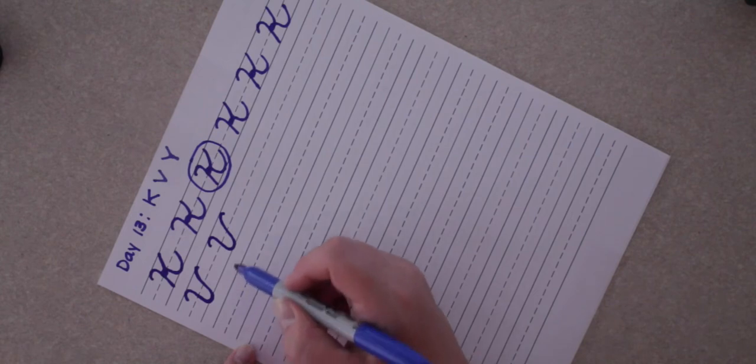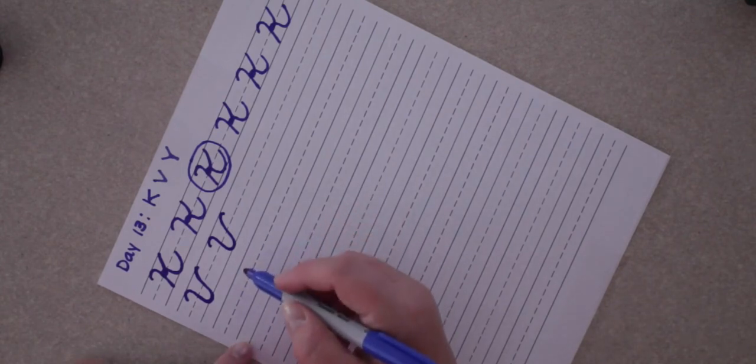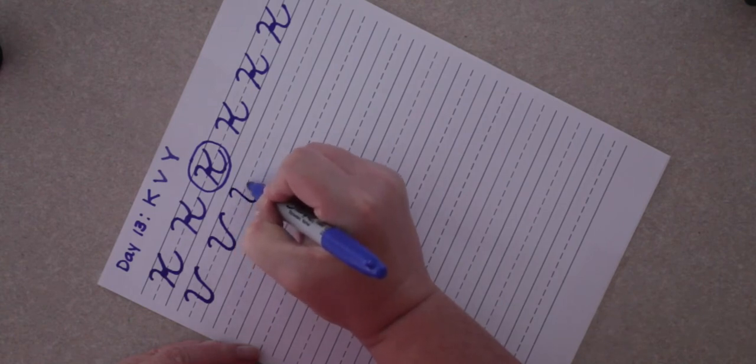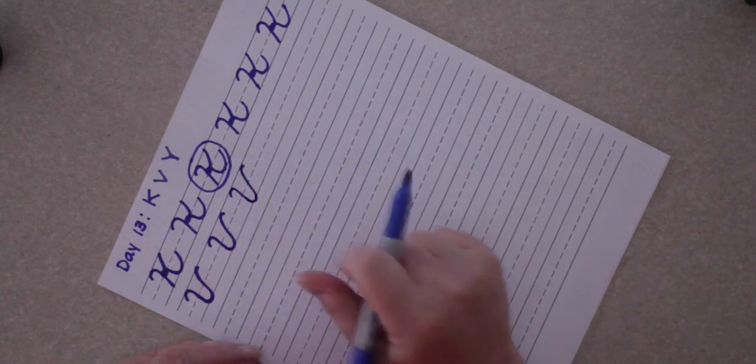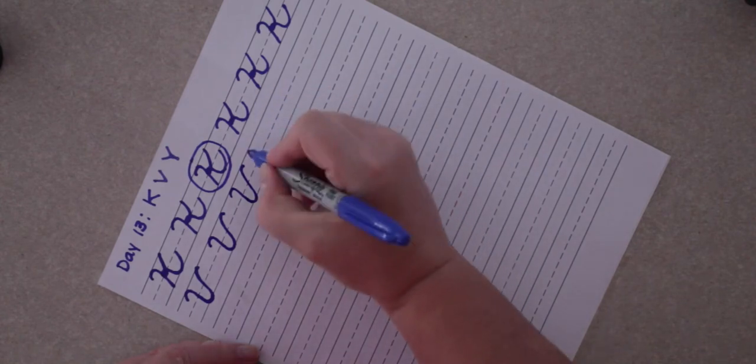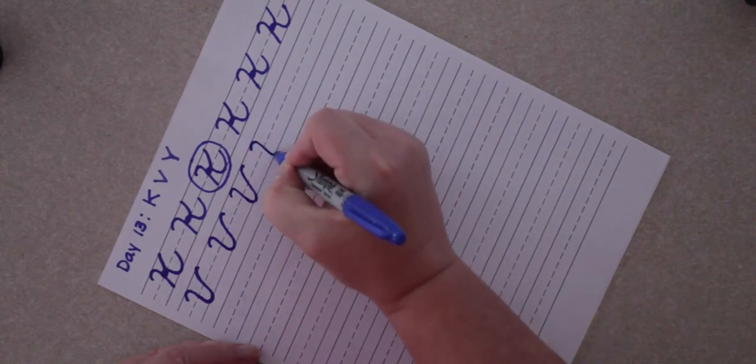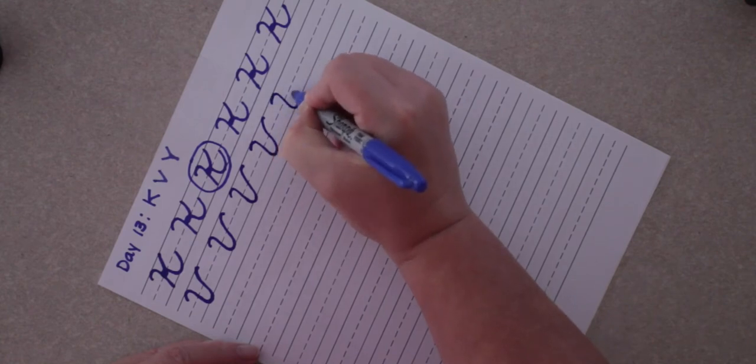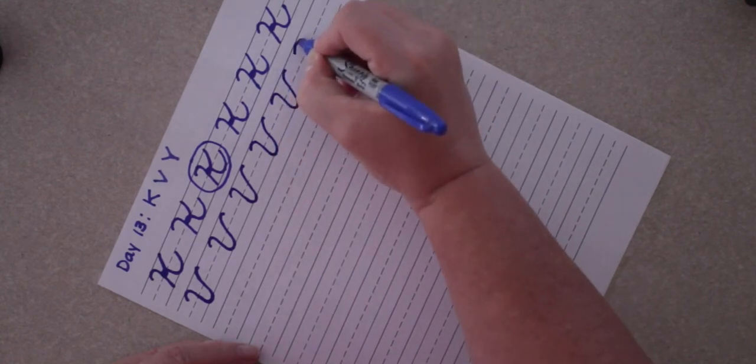Once you all start really writing in cursive a lot, you'll kind of develop your own style. You might make your letters a little bit different than this. I've seen people who make their V's pointy and that's okay, but as you're learning, it's good just to learn this way and then as you start writing in cursive more, begin to develop your own style.